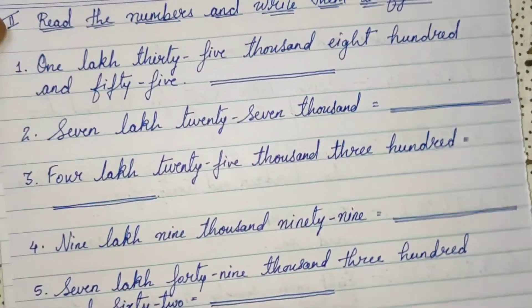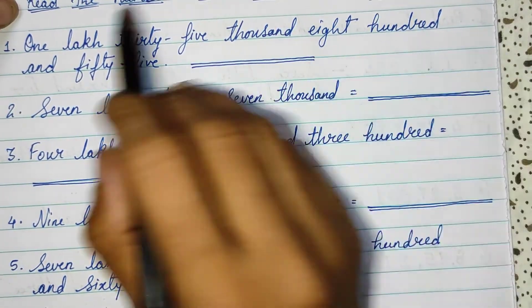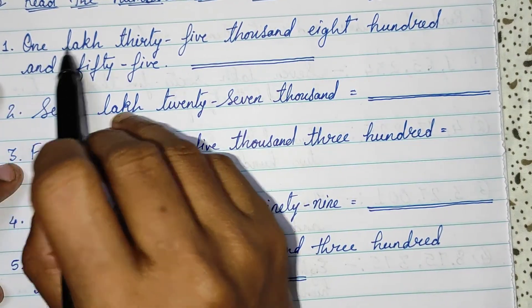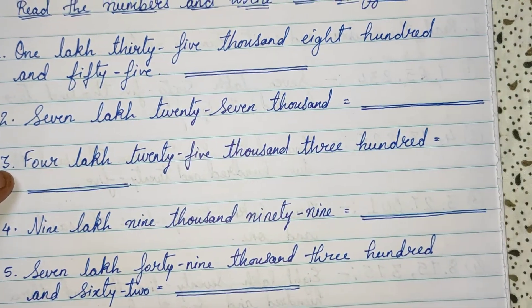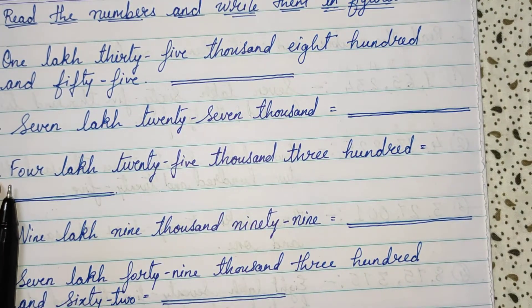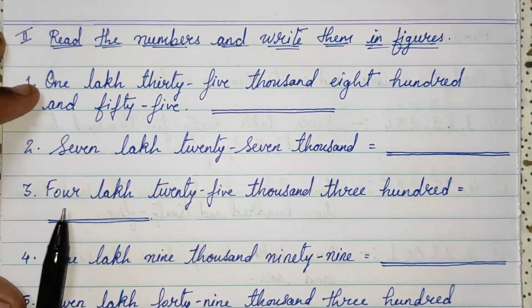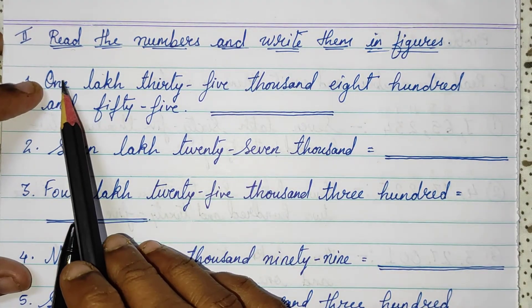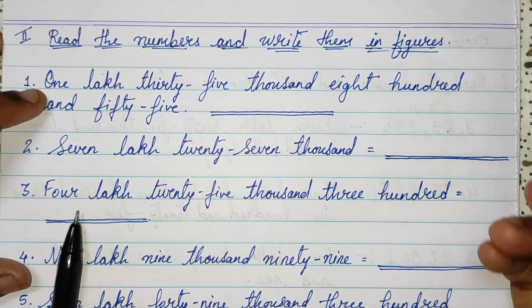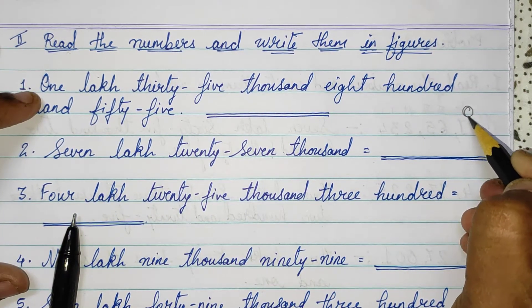Second heading: read the numbers and write them in figures. For 1,35,855 — the easiest method is, first one when you read, lakh is of 6 digits, so use your rough column and take 6 digits.